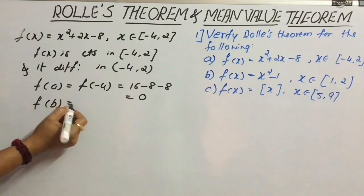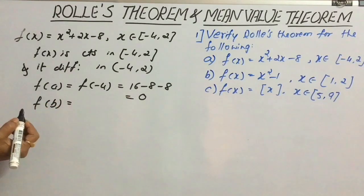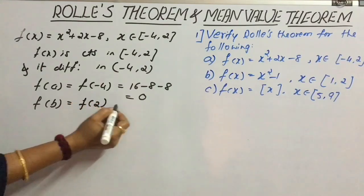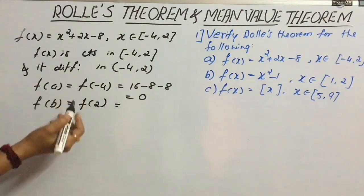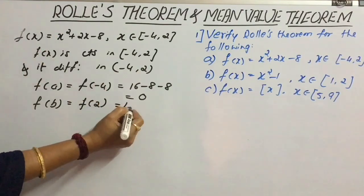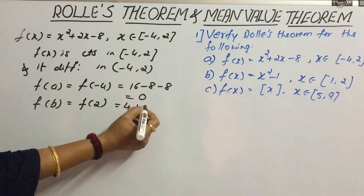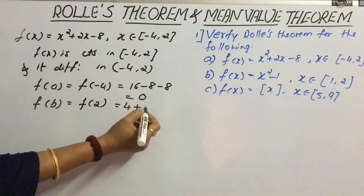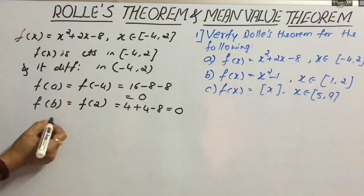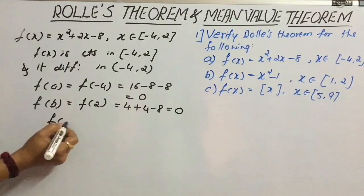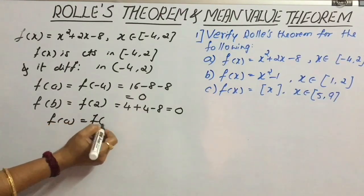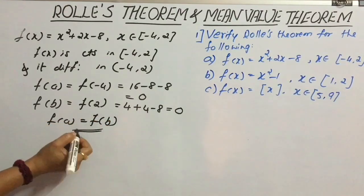Similarly, get the value of f(b). f(b) = f(2). If we replace 2 in the given function, we get 2² = 4, then 4 + 2(2) − 8 = 4 + 4 − 8. Again we get 0. So here f(a) = f(b).